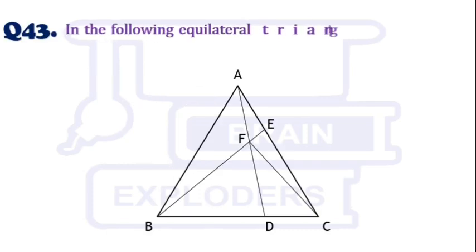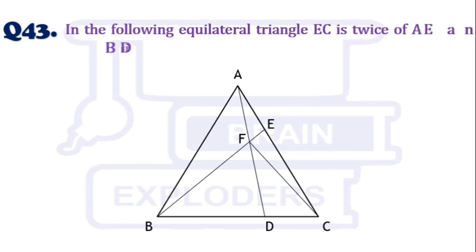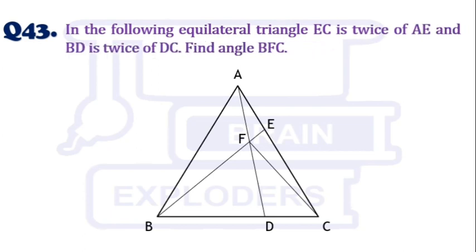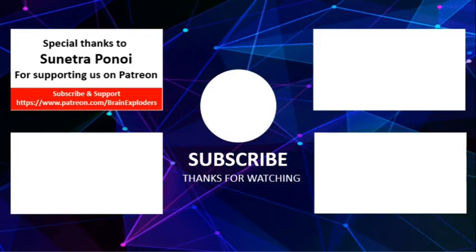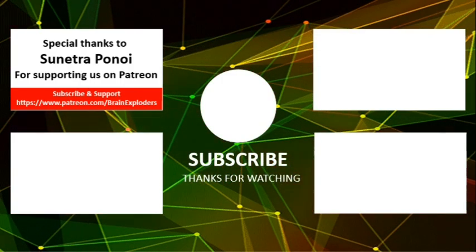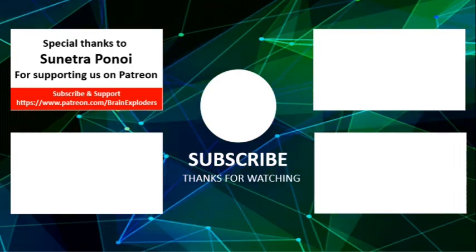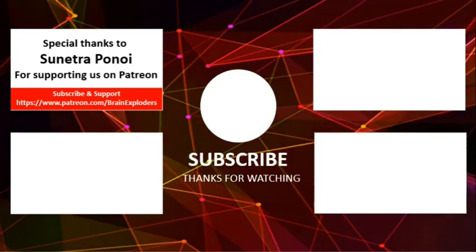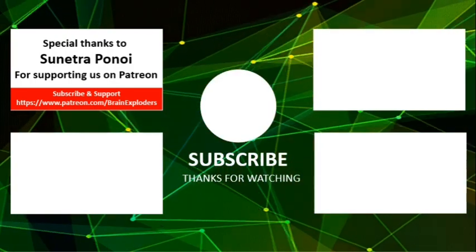In the following equilateral triangle, EC is twice AE and BD is twice DC. Find angle BFC. Try this question and send us your solution. Don't forget to like and share our video, and subscribe to our channel Brain Explorers for more such videos. Thanks for watching.